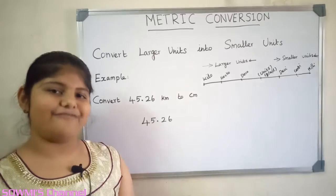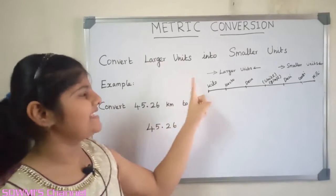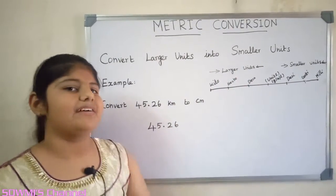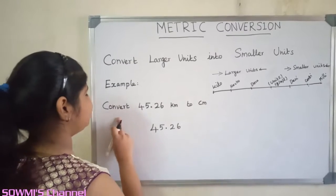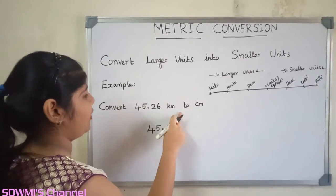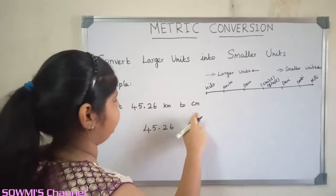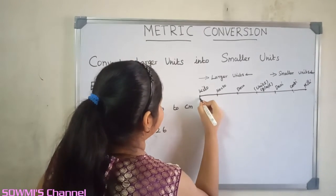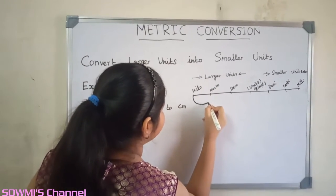First we will see how to convert larger units into smaller units. We will see some examples. Convert 45.26 kilometers to centimeters. First we have to count the jumps from kilometers to centimeters.